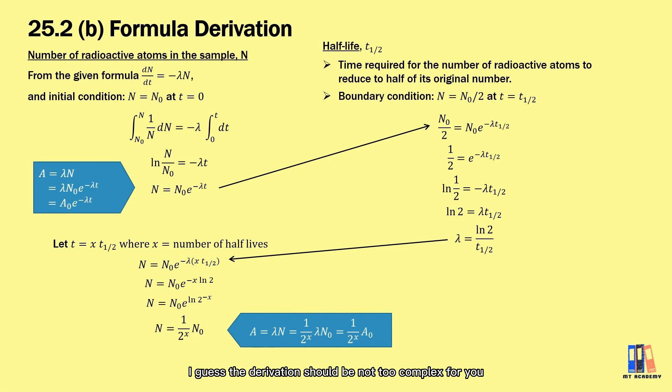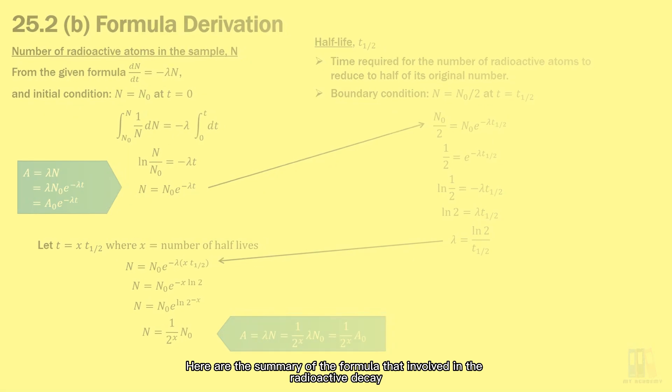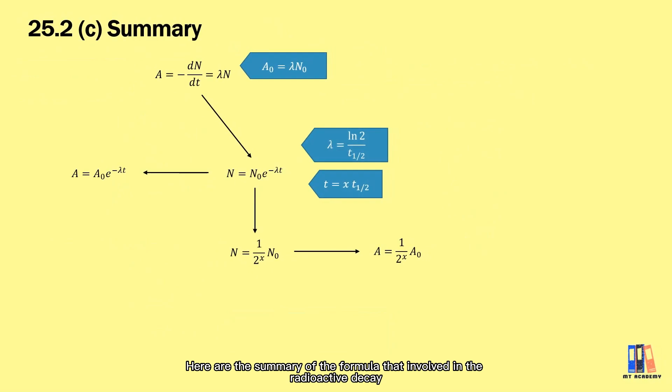I guess the derivation should be not too complex for you. Just take some time to practice it. Here are the summary of the formulas involved in radioactive decay. First line is given from the definition. Second line is directly related to the decay constant and the time of decaying. The last line is where we get the number of half-lives, which I would say is a simpler version of the equation in the second line.